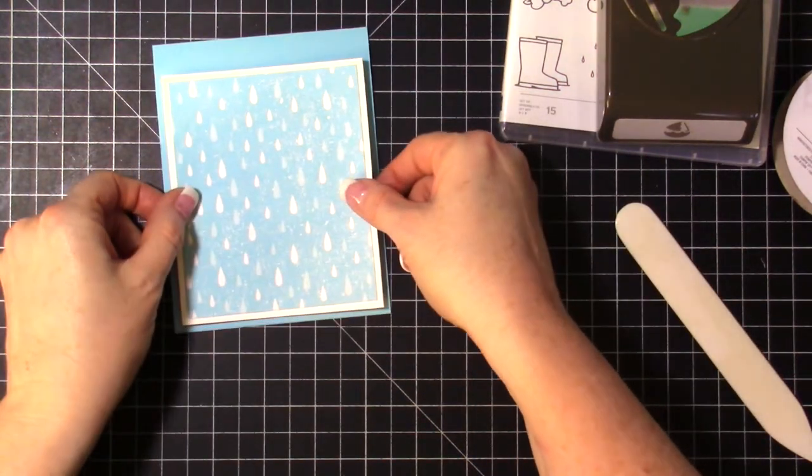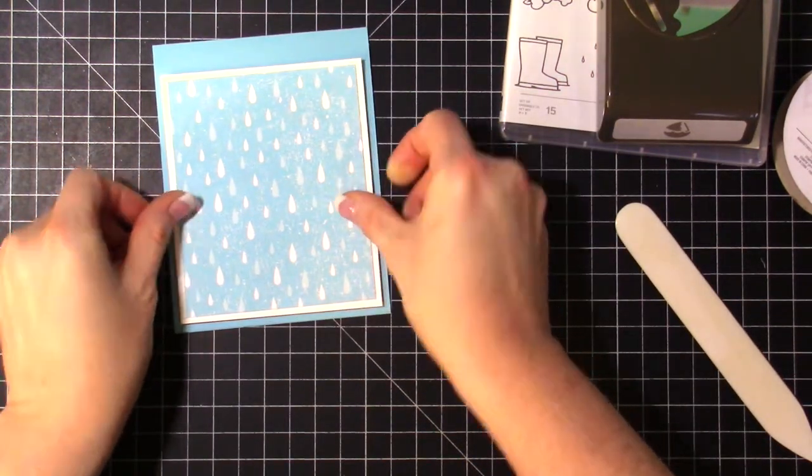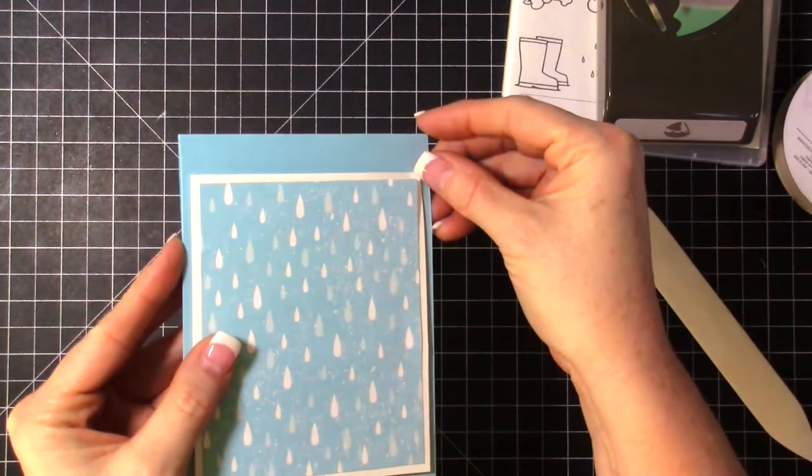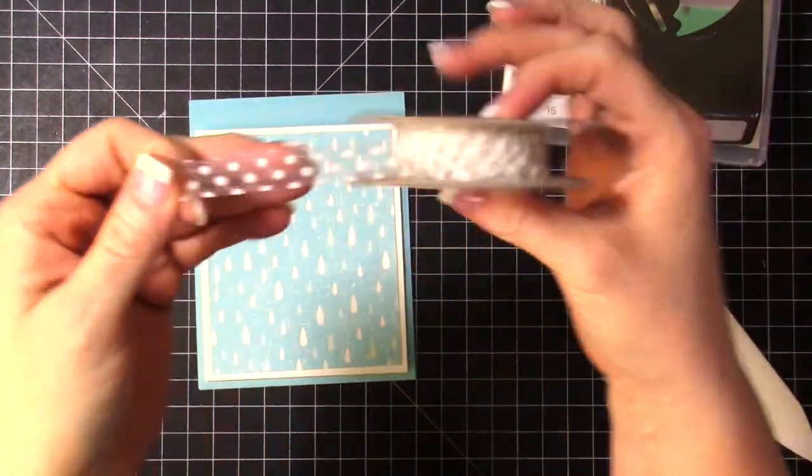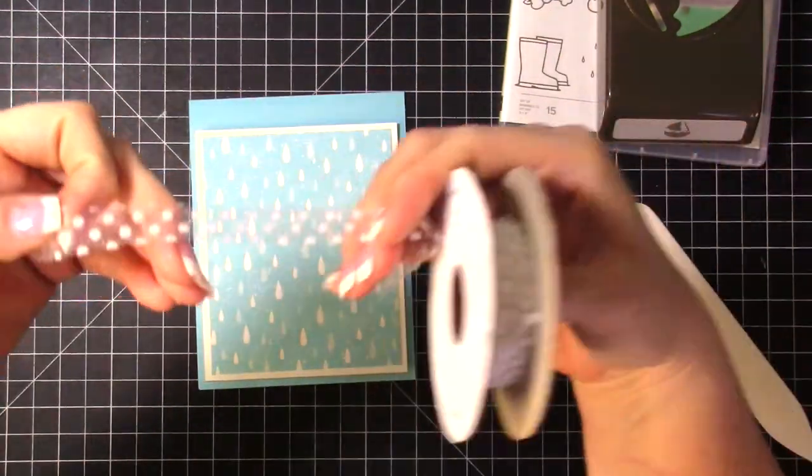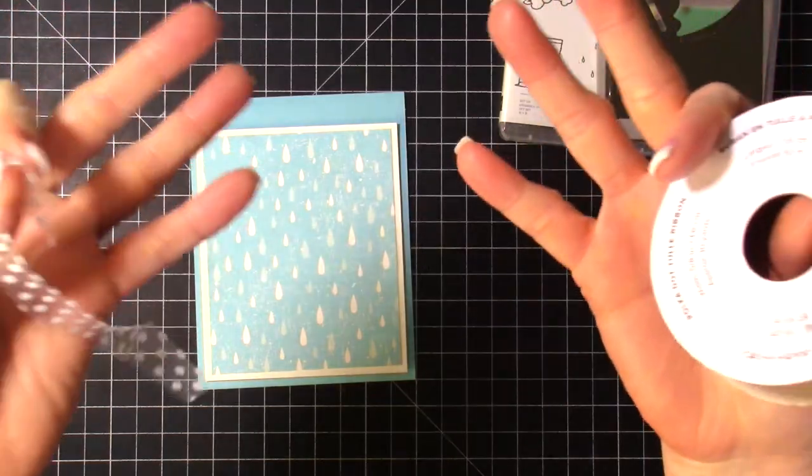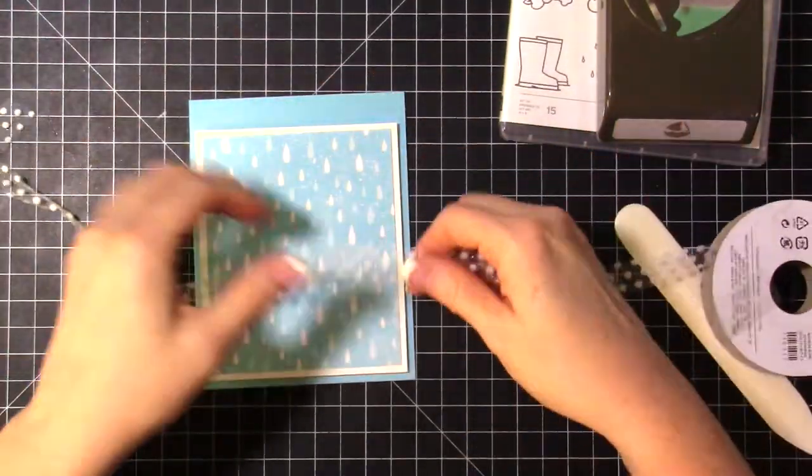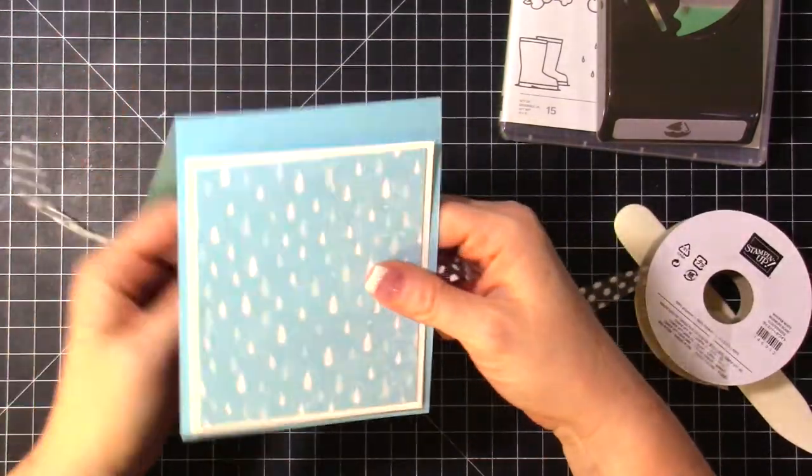It doesn't quite go all the way to the top because I'm going to add some of this polka dot ribbon, which all of a sudden totally came off my roll. This polka dot ribbon is really cute. It's white.